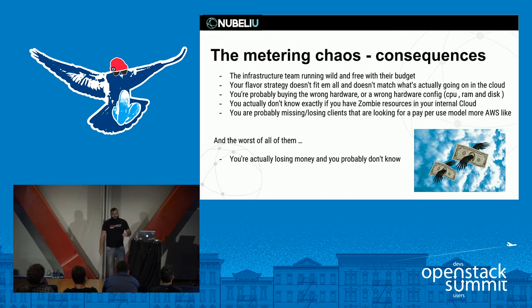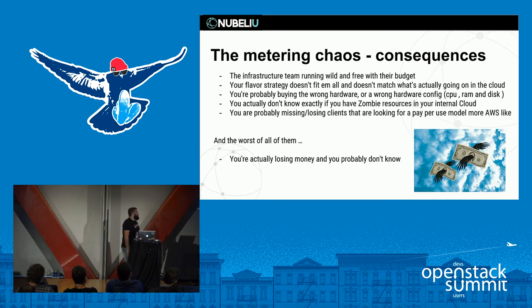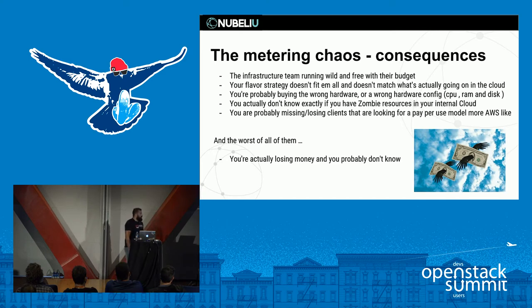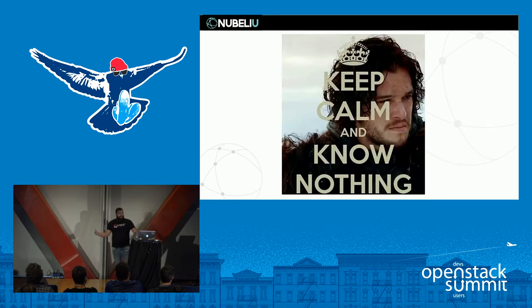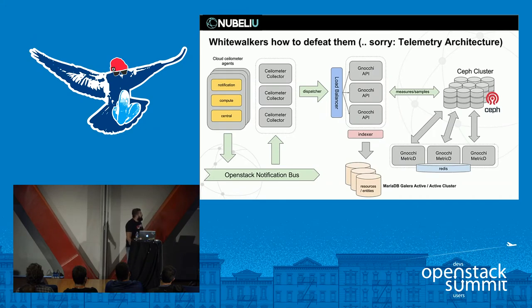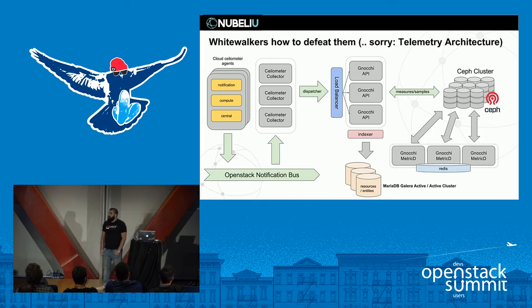The consequences are: your infrastructure team is running over budget, always asking for more servers because developers and consumers of the infrastructure always need more resources — and you don't know if that's because the need is genuine, or because you have a bad flavor strategy, you're buying the wrong hardware, or things aren't configured right because you have no metrics. Also common in private clouds without advanced measuring: you have servers with instances from 1992 — launched by a developer, sitting there doing nothing, consuming resources that you can't allocate to projects that actually need them. You might also be missing clients because your quota-based charging model doesn't fit their needs, or worse — losing money without knowing it.